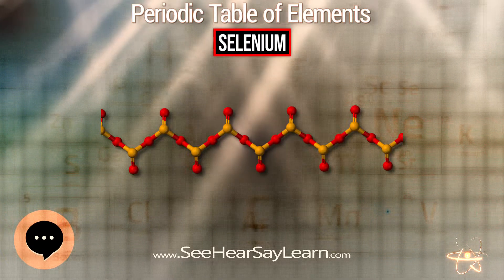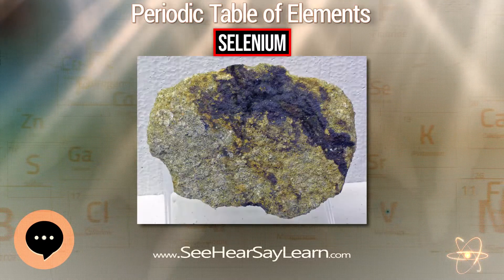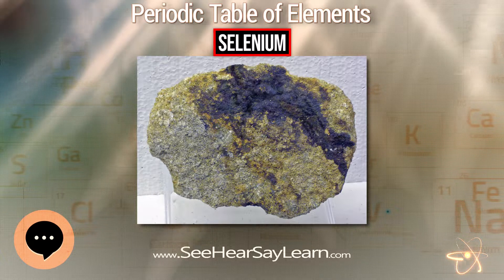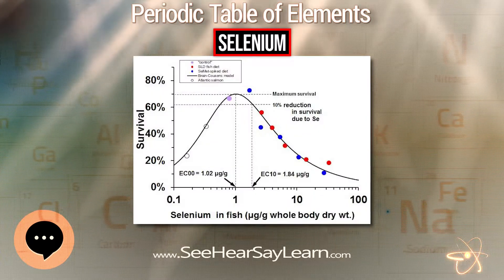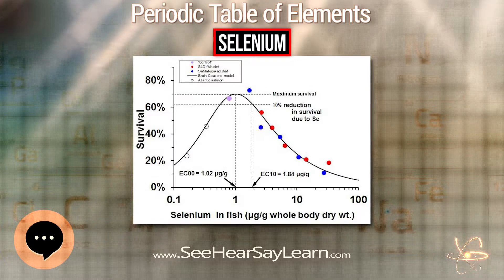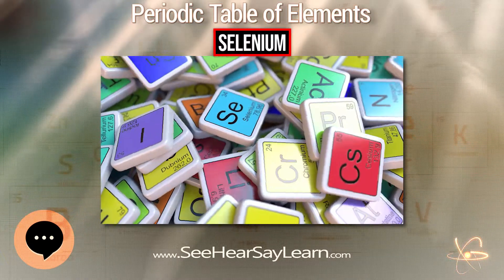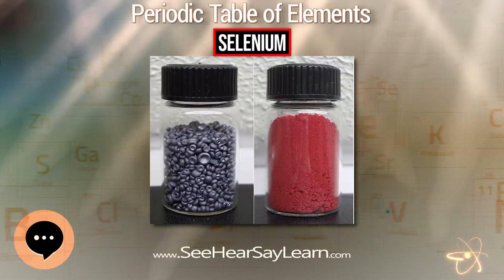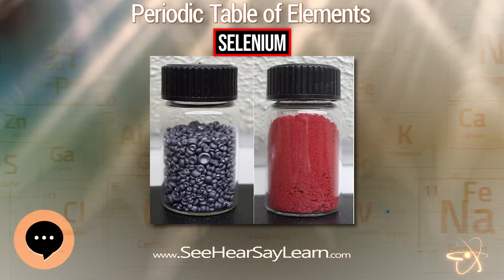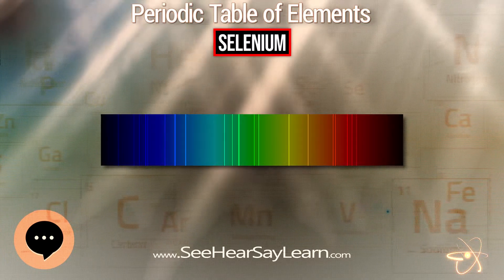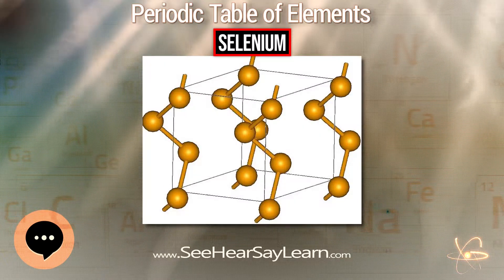A similar odor was known from tellurium compounds. Hence, Berzelius's first letter to Alexander Marcet stated that this was a tellurium compound. However, the lack of tellurium compounds in the Falun mine minerals eventually led Berzelius to reanalyze the red precipitate. In 1818 he wrote a second letter to Marcet describing a newly found element similar to sulfur and tellurium. Because of its similarity to tellurium, named for the earth, Berzelius named the new element after the moon.